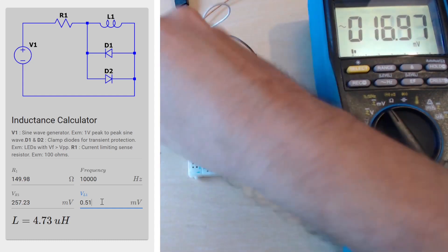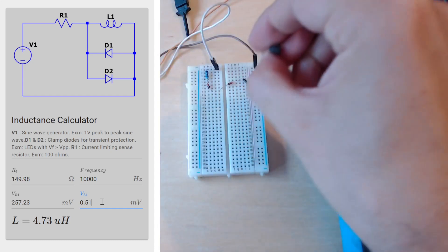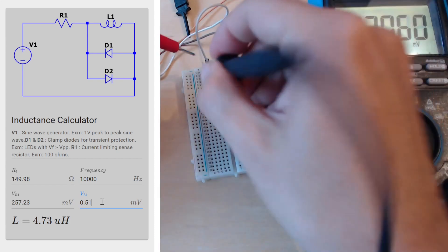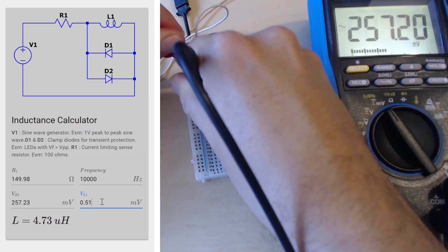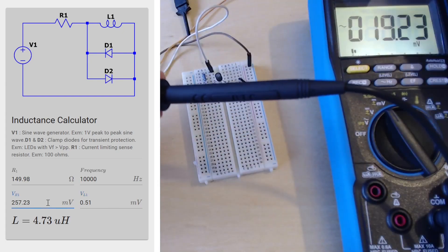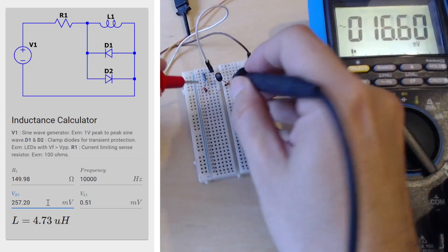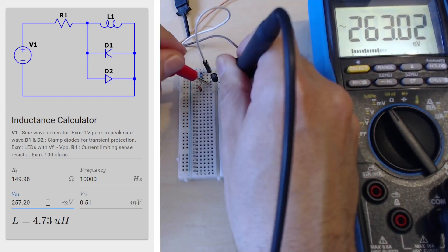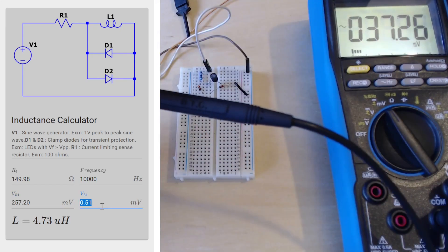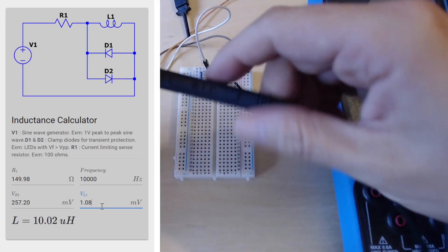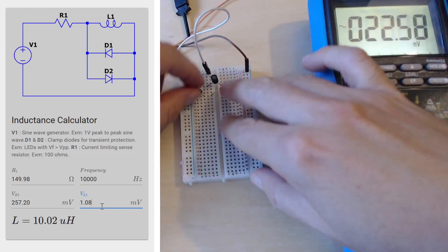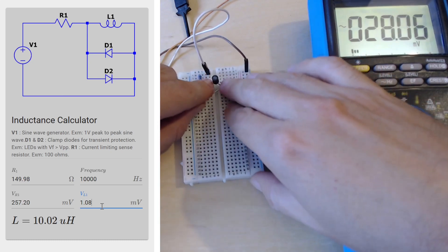Now let's measure another inductor just to test that our method is working. This is a 10 microhenry inductor. We're going to do the same measurements. Measure the voltage across the resistor first: 257.20. It's pretty close to the previous one, that's good. That's what we would expect. And now let's measure the voltage across our inductor: 1.08. Yeah that's pretty accurate. It's almost exactly 10 microhenrys, and this is like a 10 percent tolerance component.